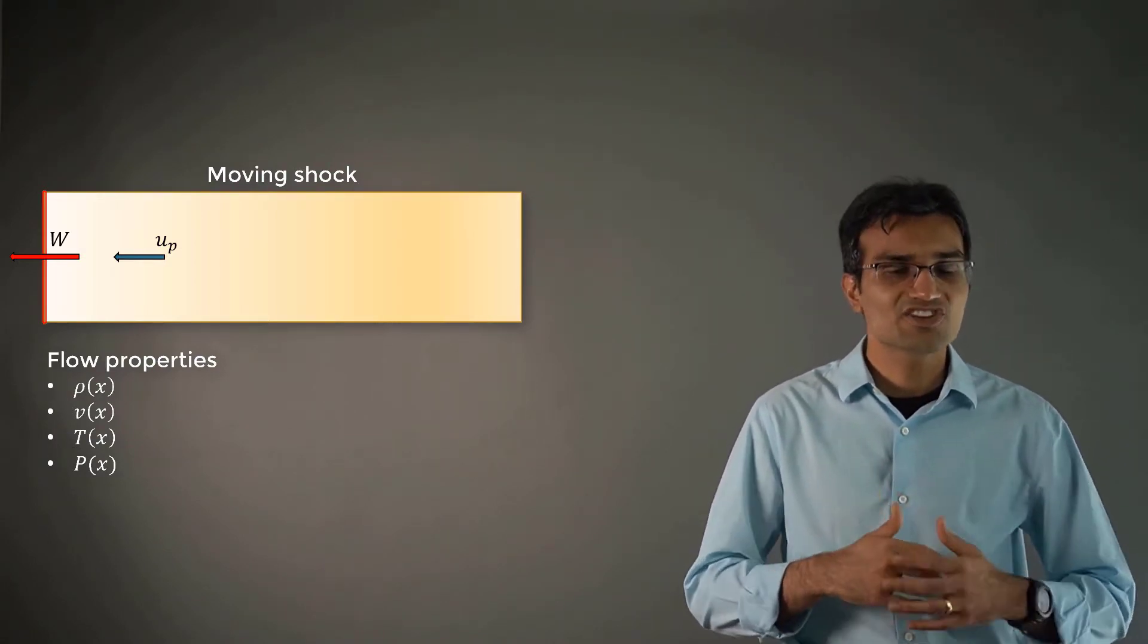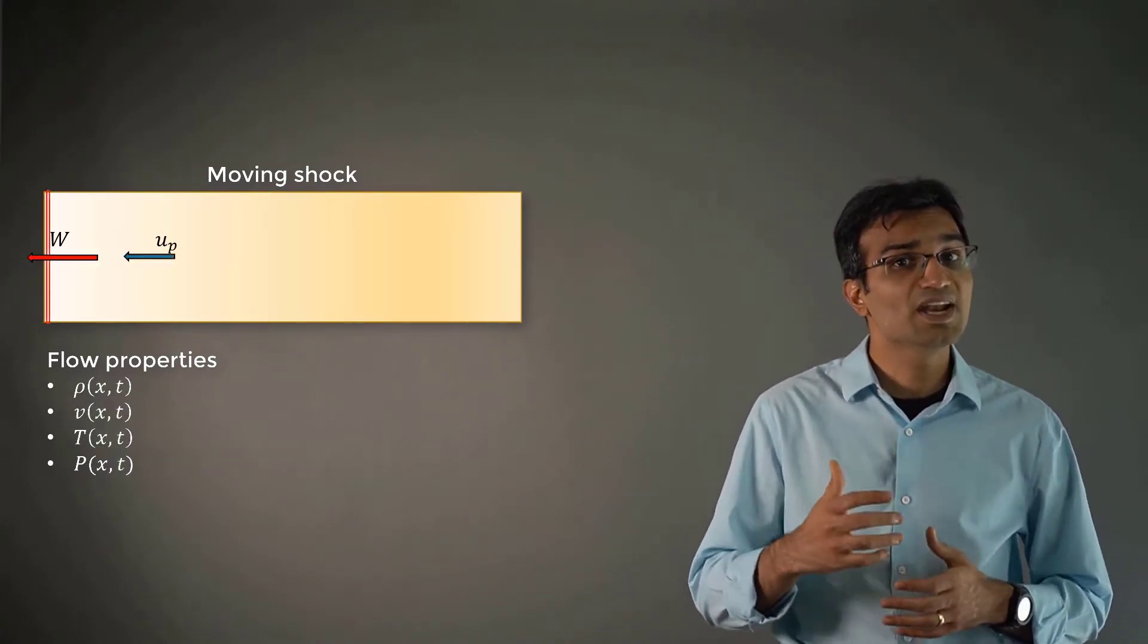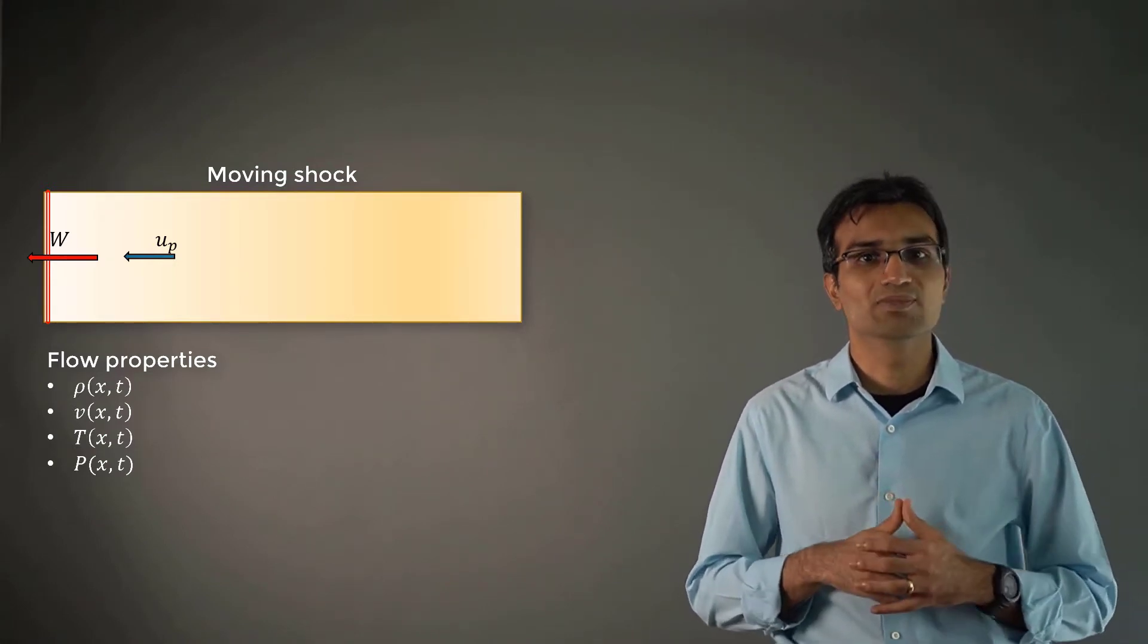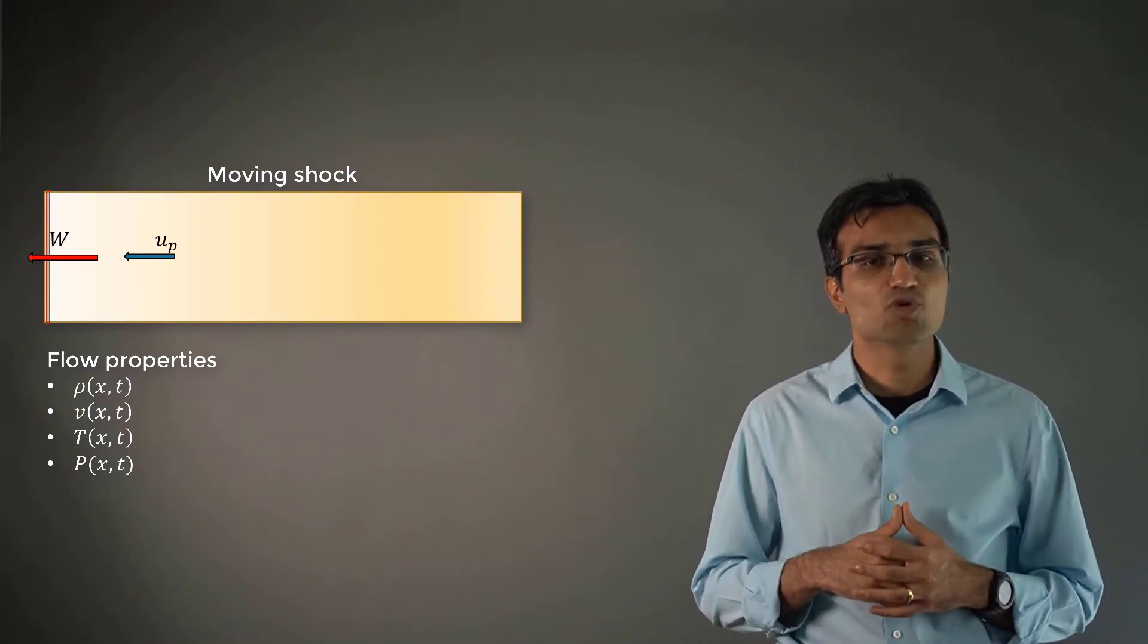Unlike the case of stationary waves, the properties of the flow field are now dependent on the time variable T along with X, the space variable. This is what is known as unsteady wave motion.